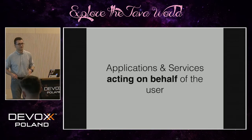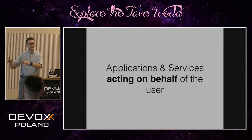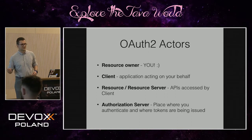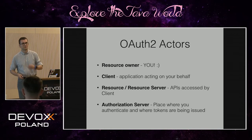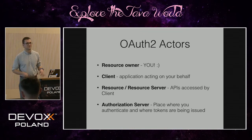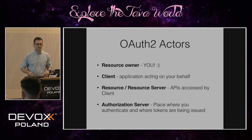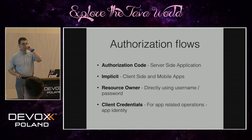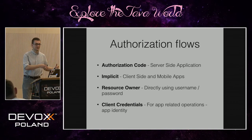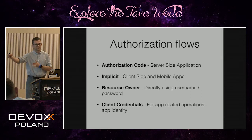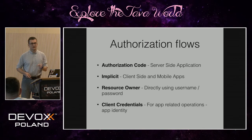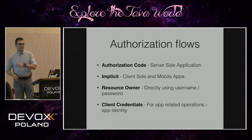What OAuth2 tries to do is define a protocol so applications and services can act on your behalf as a user to access resources which belong to you. The actors are: the resource owner — you; the client — which can be a browser, a mobile app, or something else; the resource — the API someone is trying to use; and the authorization server — the place where you authenticate and where the token is issued. OAuth2 is flexible and defines different ways to interact depending on the use case: for server-side applications there's one flow, for client-side or mobile there's another, or an application can obtain a token directly or have its own identity.